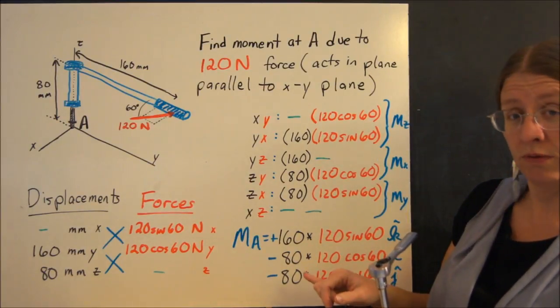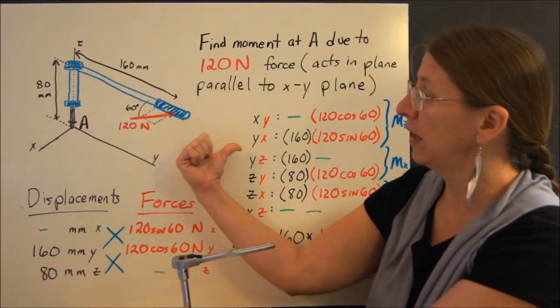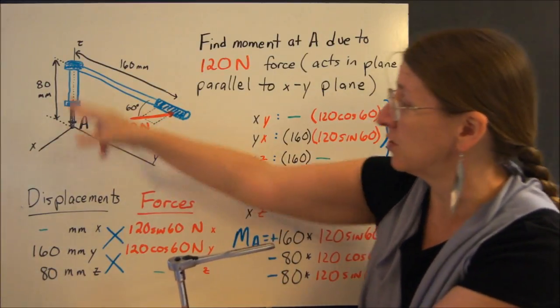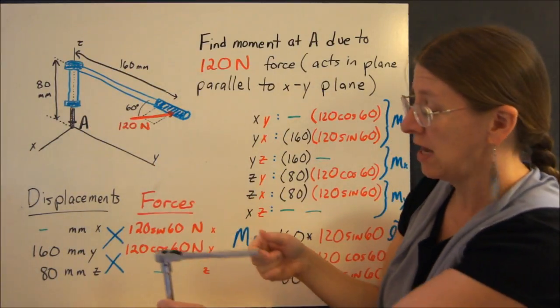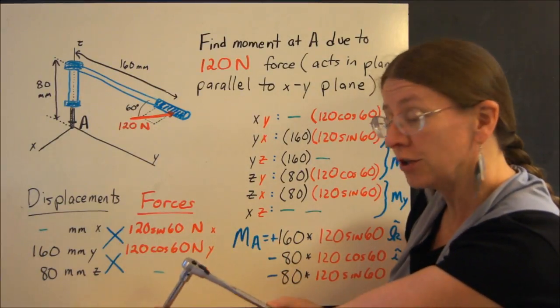What's the last one? The last one is the component here in the y-direction and this distance. Excuse me, 80 times this distance. This is as if you are sitting here at A and pulling on your wrench.